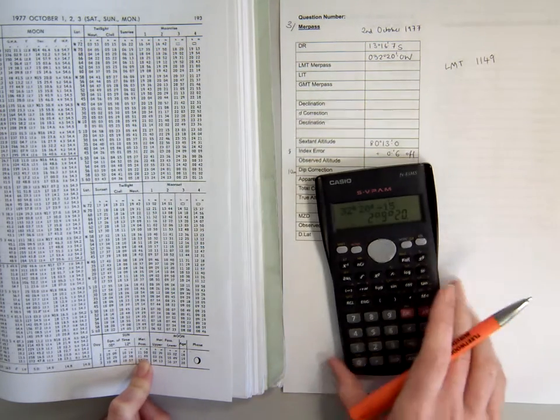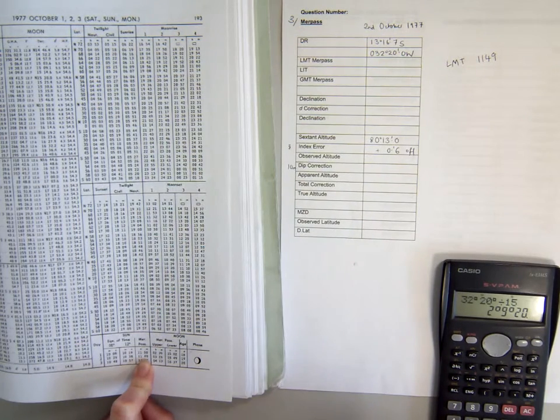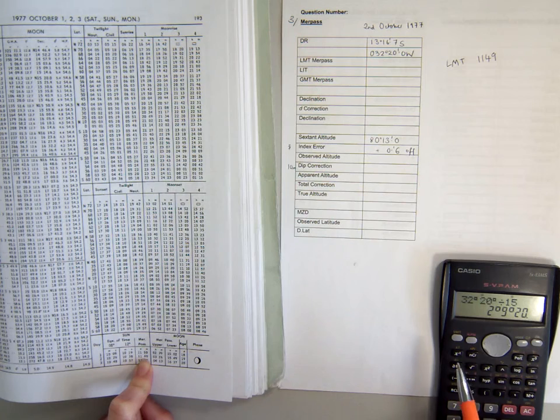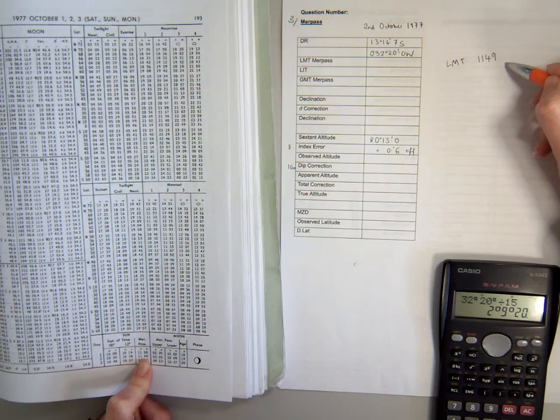Now for the purpose of a MERPAS observation we only actually need the time to the nearest minute so I'm quite happy to just disregard that 20 seconds because I'm really interested in this 2 hours and 9 minutes and I can apply that to 1149 to get my GMT to the nearest minute.